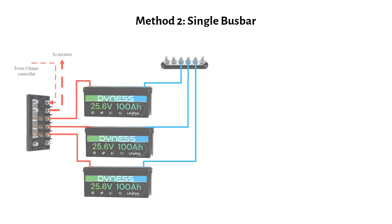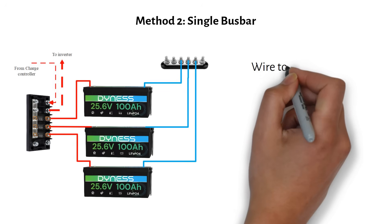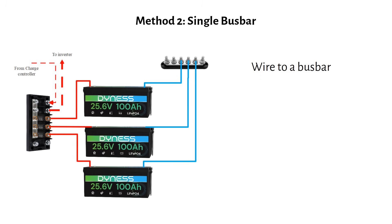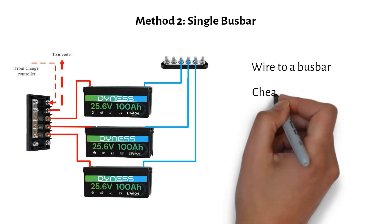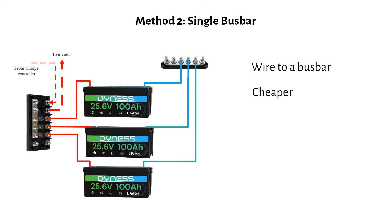Instead of running cables diagonally, you wire each one individually to a single mega fuse bus bar. Your inverter and charge controller also branch off from the same bus bar. This saves money because you can use thinner cables for each battery connection. You're not carrying the full system current through every wire. Mega fuses are also cheaper than MRBF fuses.